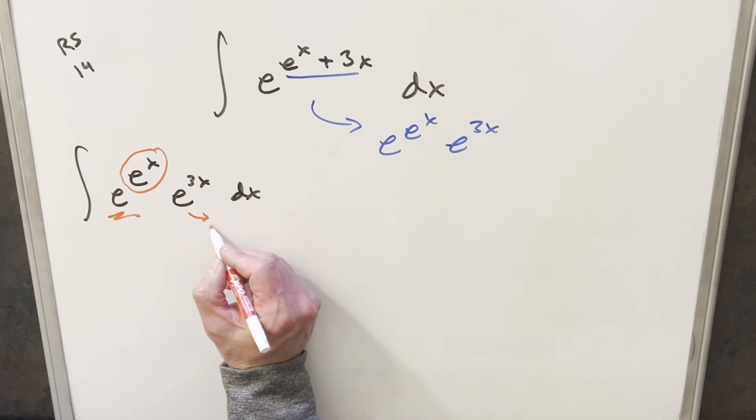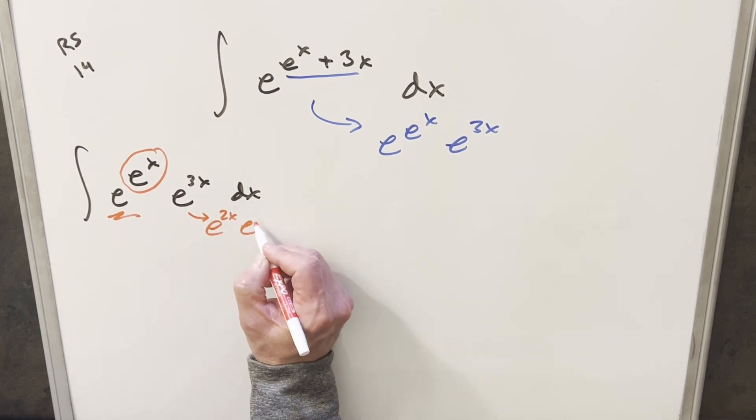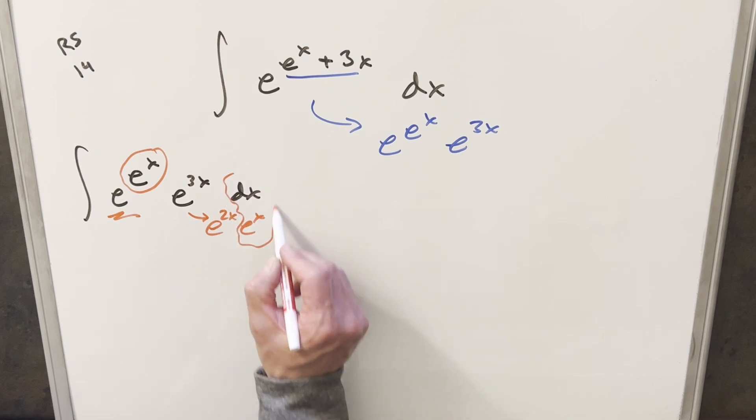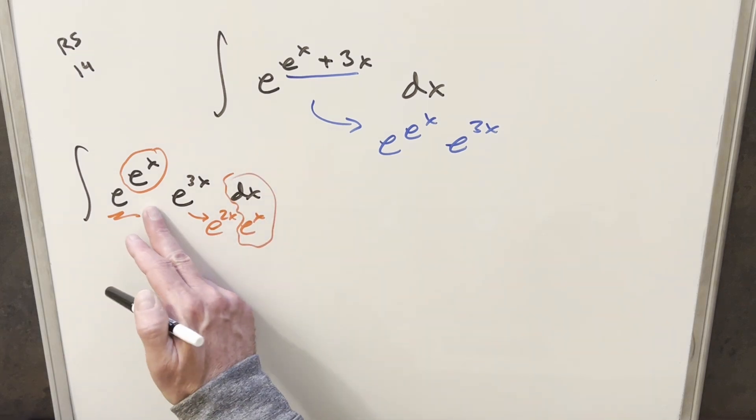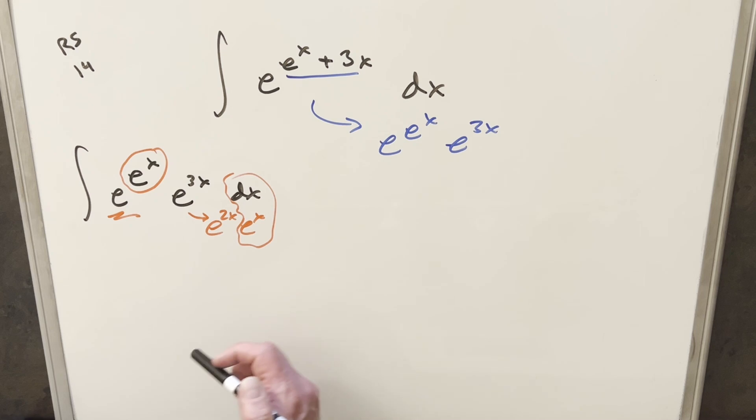But then here, if I break this up, if I write this as like e^x times e to the e^x, well then we're going to have our derivative right here. So I think doing the u substitution this way gives us a quick and straightforward way to our solution.